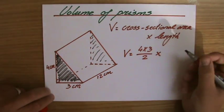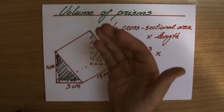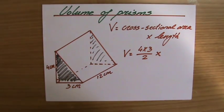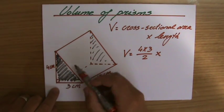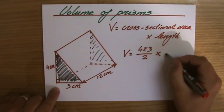And I'm going to times that by the length. And the length is that distance between those two similar ends. So the distance between this triangle and that triangle. So that in this case is 12.